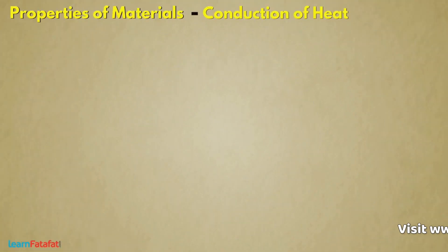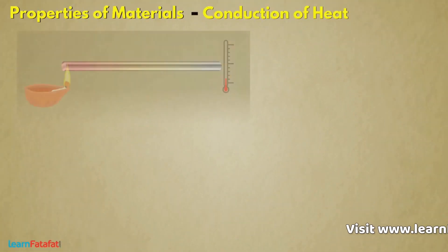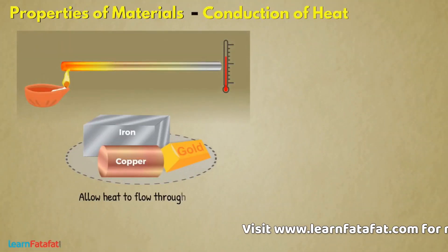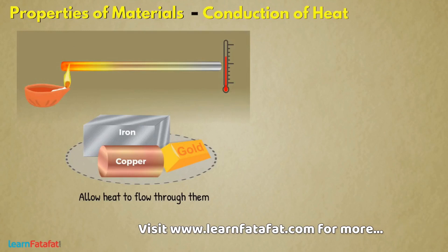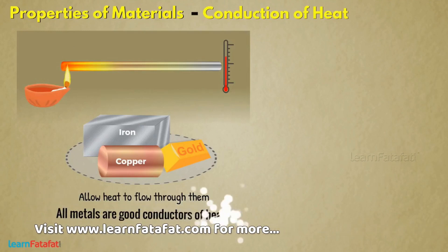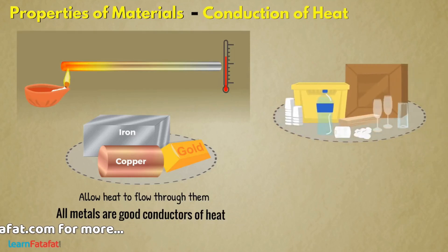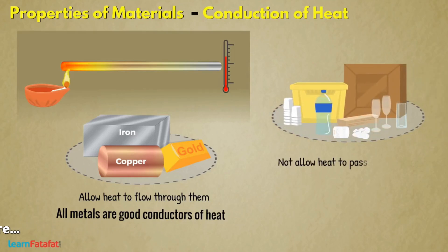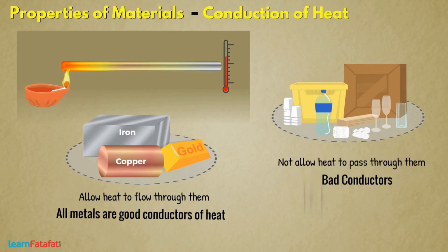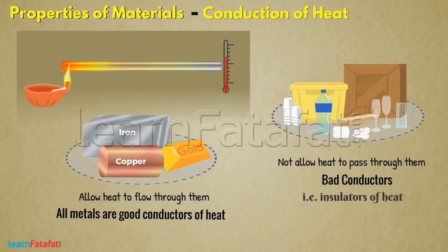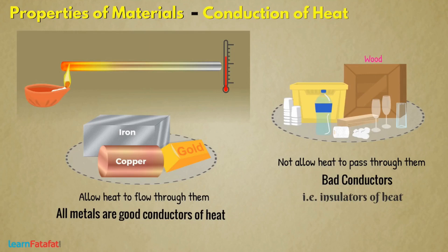Conduction of heat: Some materials allow heat to flow through them. For example, all metals are good conductors of heat. Other materials which do not allow heat to pass through them are bad conductors — that is, insulators of heat. For example, wood, plastic, cotton, glass, etc.